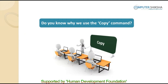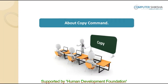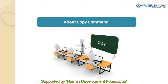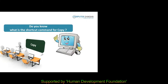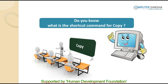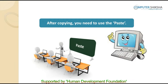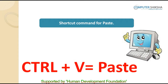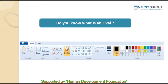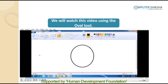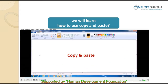Do you know why we use the copy command? With the copy command you can make many copies of one picture or a word — this could simply be a line or a rectangle, etc. Do you know what is the shortcut command for copy? The shortcut command to copy is Control plus C. However, after copying you need to use the paste command with the shortcut Control plus V. Do you know what is an oval? An oval is like a stretched circle.